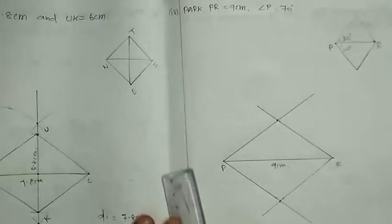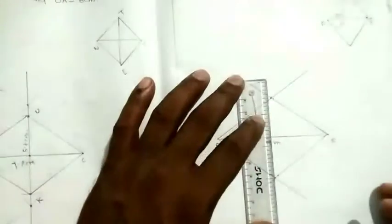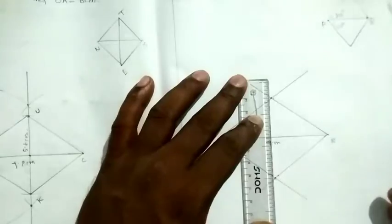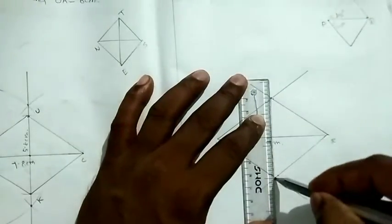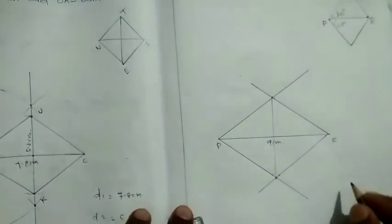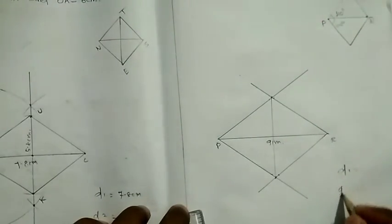Now, the rhombus is formed. Now, we will draw the diagram. Here we go, D1, D2, D1 and D2.